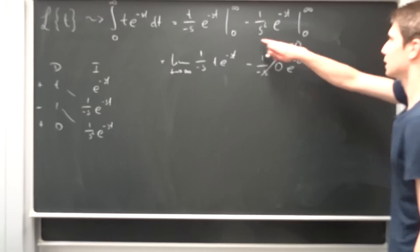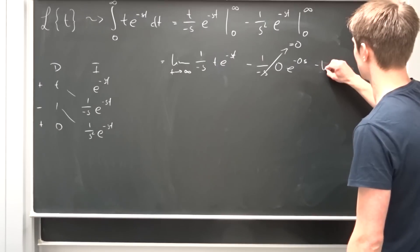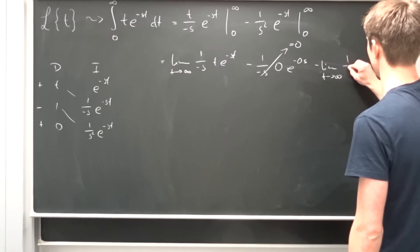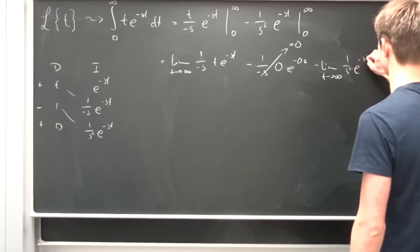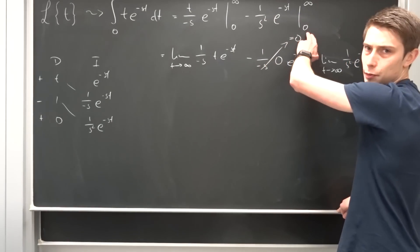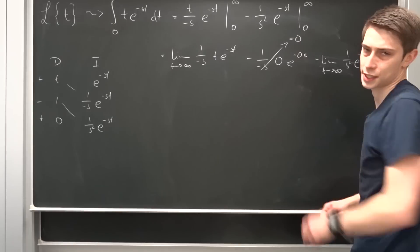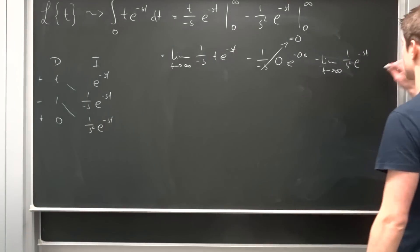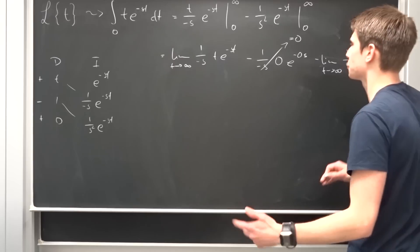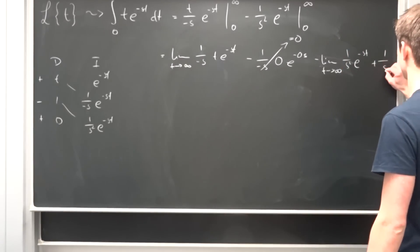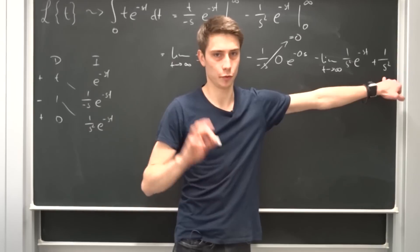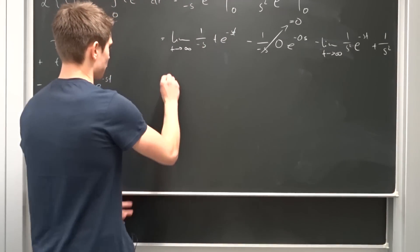And what else do we get? So next thing we get is minus the limit as t approaches infinity of 1 over s squared e to the minus st, and then minus 1 over s squared. And if we apply 0 to this function that's just e to the 0, so that's 1. So minus and minus becomes positive. So that's positive 1 over s squared. So let's see what we can conclude. We end up with 1 over s squared at first.